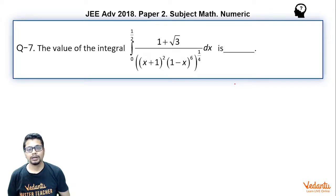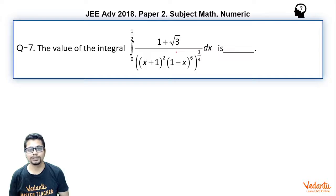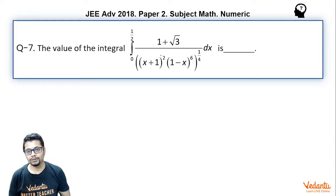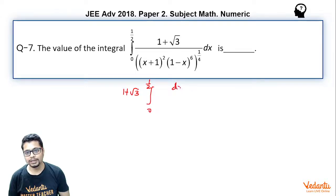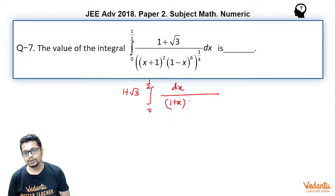This is a numeric type question. As you see the question, you may clearly say that (1 + √3) is there just to make the final value look clean. So you may take it out as a constant and consider the integral from 0 to 1/2 of dx. The 2 can be cancelled and you may write (1 + x)(1 − x)³ to the power 1/2.